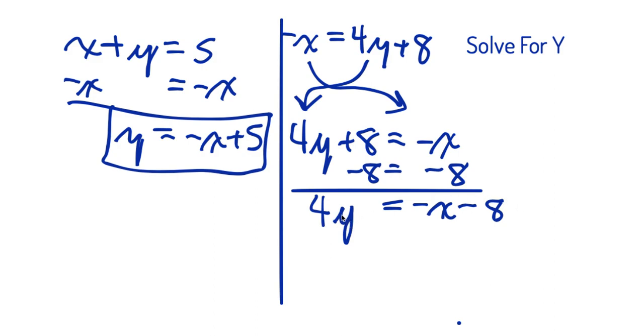Now I want to solve for 1y. I don't want 4y. So I'm going to divide both sides by 4. And I get y equals negative x minus 8 over 4.